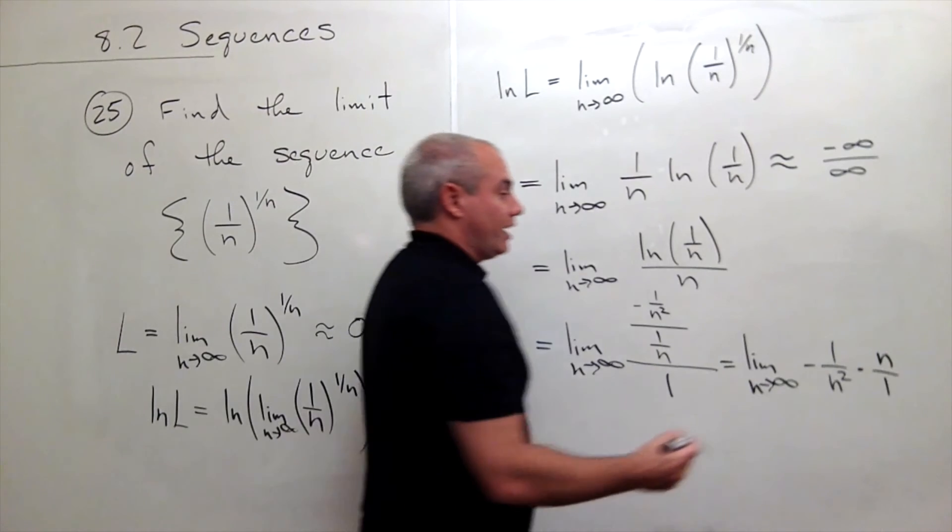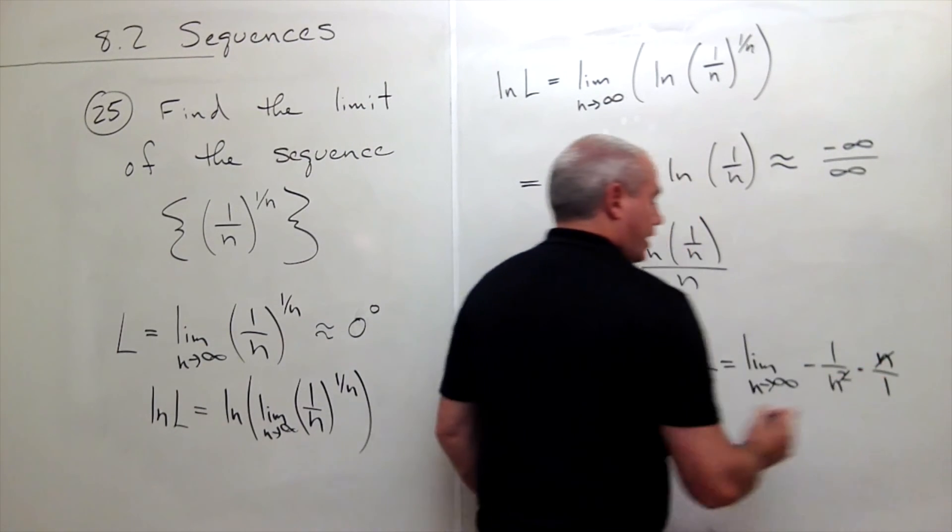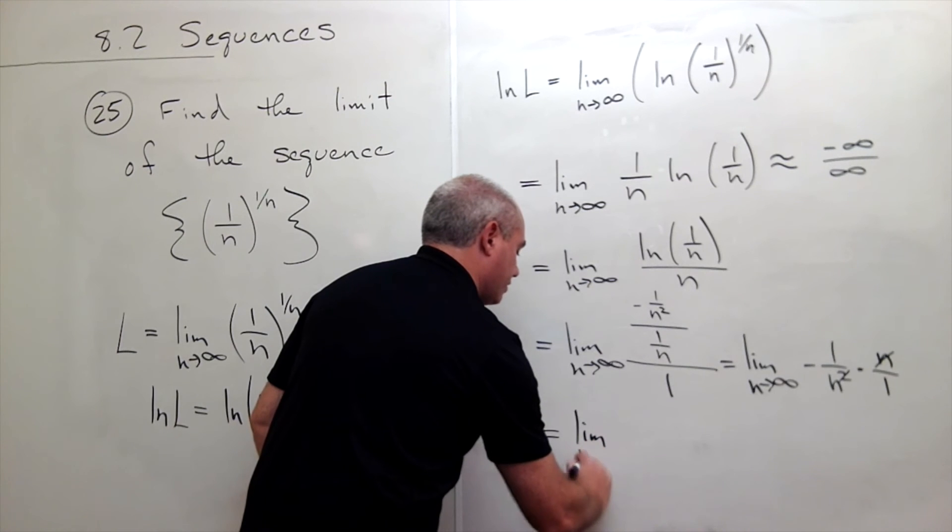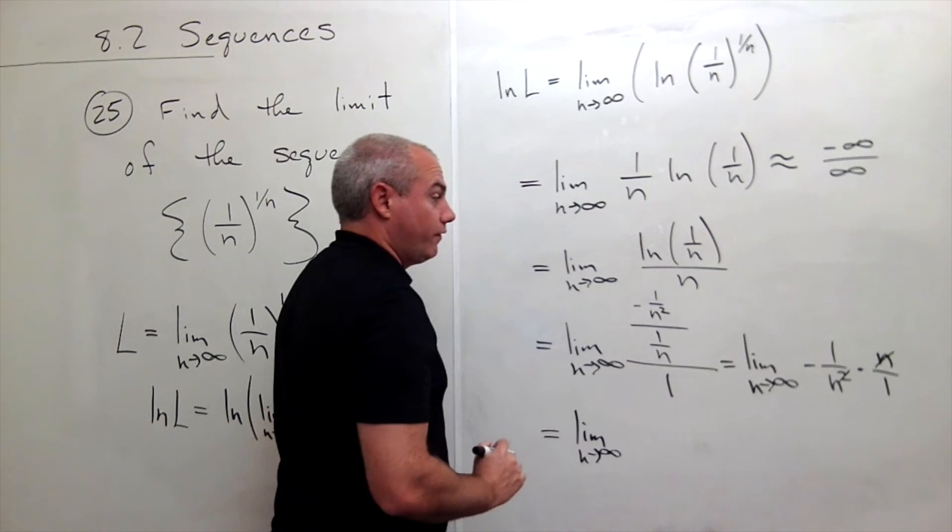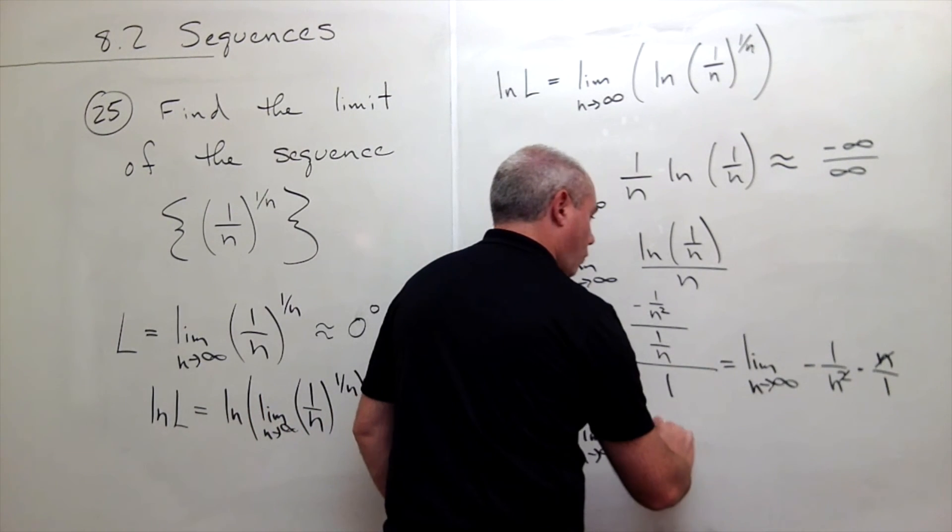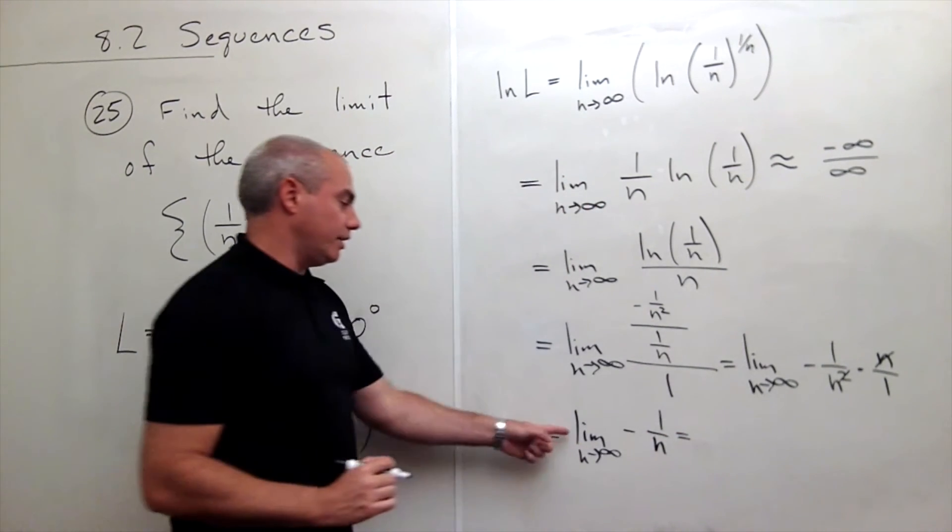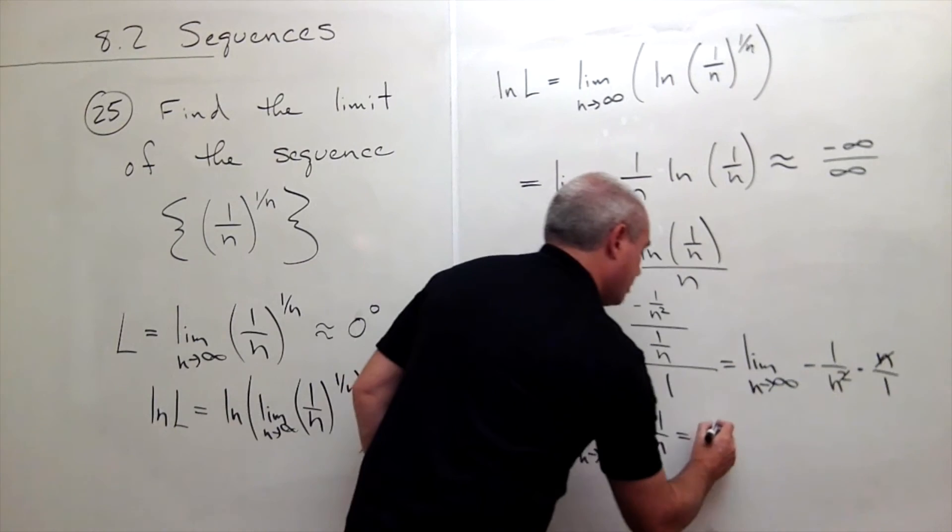One of the n's cancels and I'm left with the limit as n goes to infinity of negative 1 over n. But that is clearly just 0.